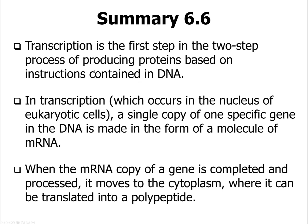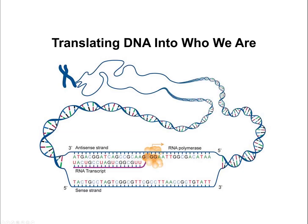Transcription is the first step in the two-step process of producing proteins based on instructions. It occurs in the nucleus, where a single copy of one specific gene of the DNA is made in the form of messenger RNA. That messenger RNA is then moved into the cytoplasm where it can be translated into a polypeptide using the endoplasmic reticulum. The RNA transcript of the antisense strand becomes the sense strand — the messenger RNA sequence — except with uracils instead of thymines.